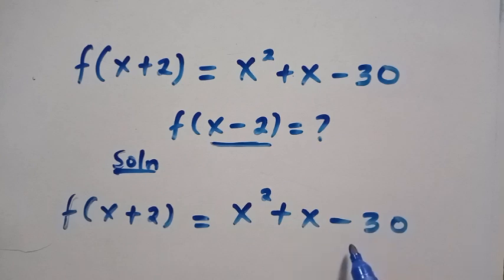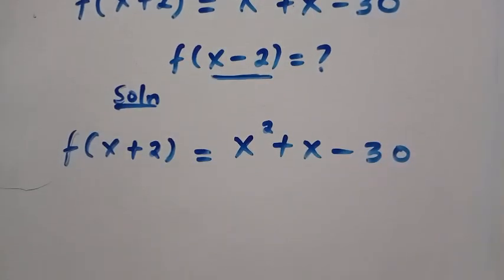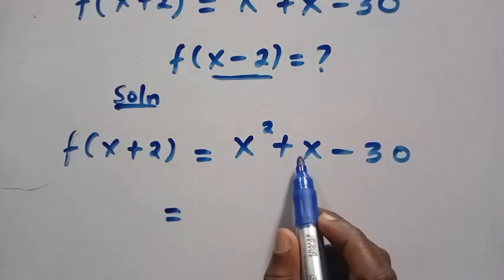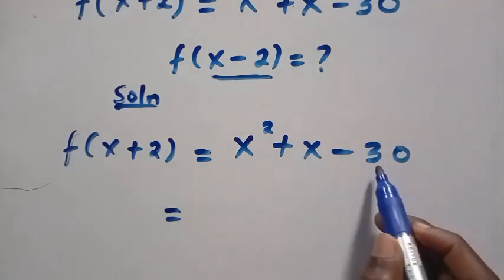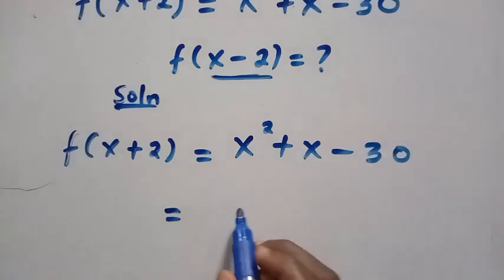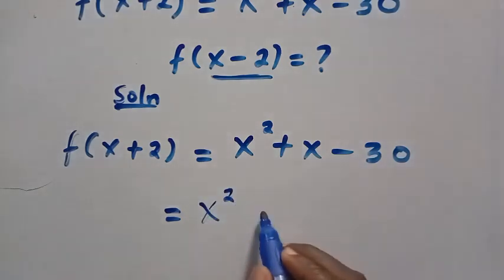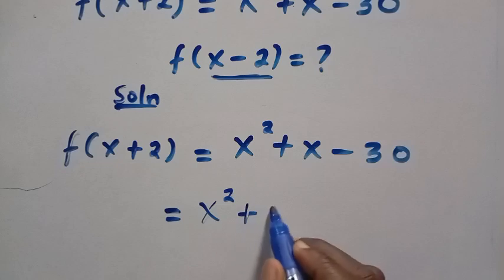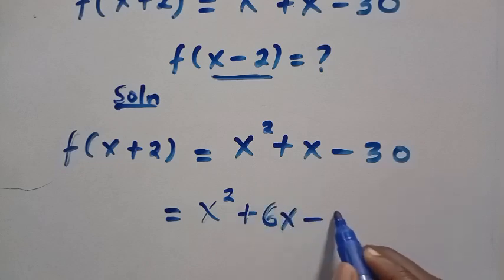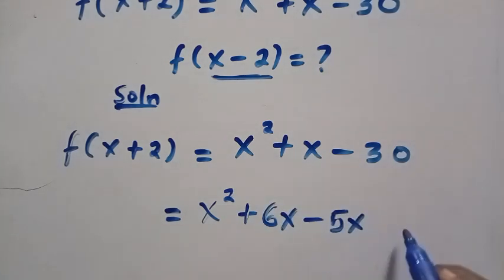We look for two numbers where the sum will be 1 and the product will be minus 30. The two numbers I can think of are minus 5 plus 6, because minus 5 plus 6 gives us 1, and minus 5 times 6 gives us minus 30. Therefore, we are going to replace this as x squared plus 6x minus 5x, then minus 30.